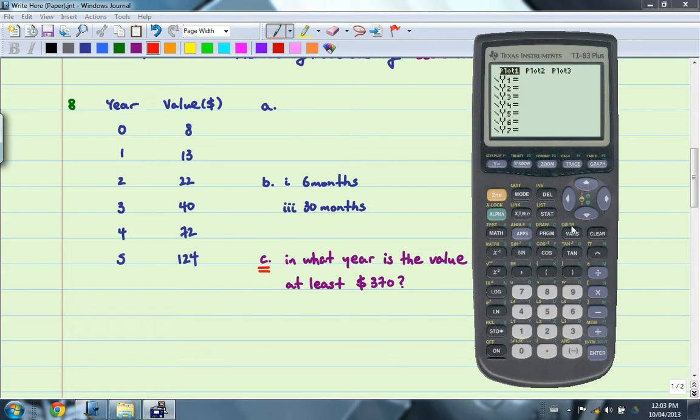Go to y equals, and you go to vars, number 5, statistics. Move over to the EQ menu, and you want regression equation number 1. So you press enter, and it will enter for you. So you can graph, and it should go through all of the points. And it does, which is good.